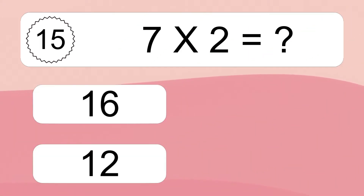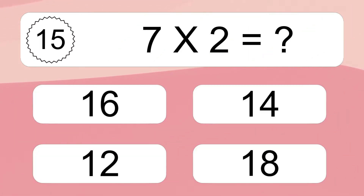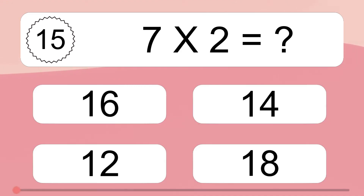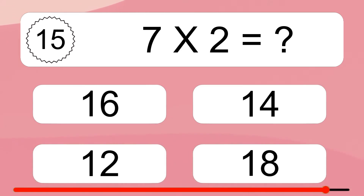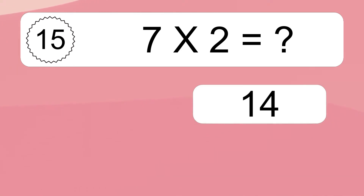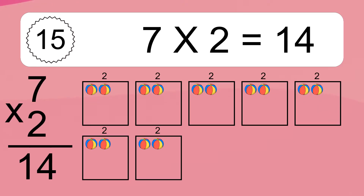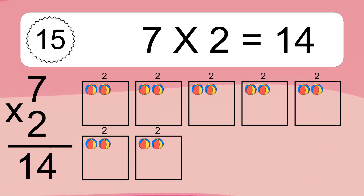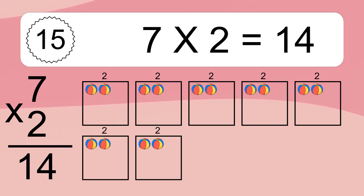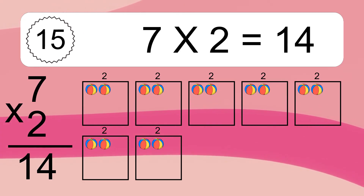Seven times two equals what? Seven times two equals 14. We have seven boxes and each box has two colorful balls inside. If you count all the balls in all the boxes together, you will have seven times two balls. This equals 14 balls.